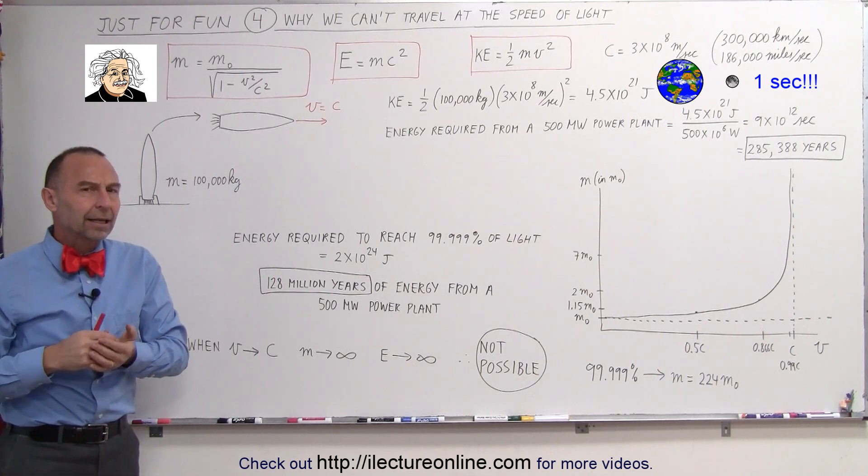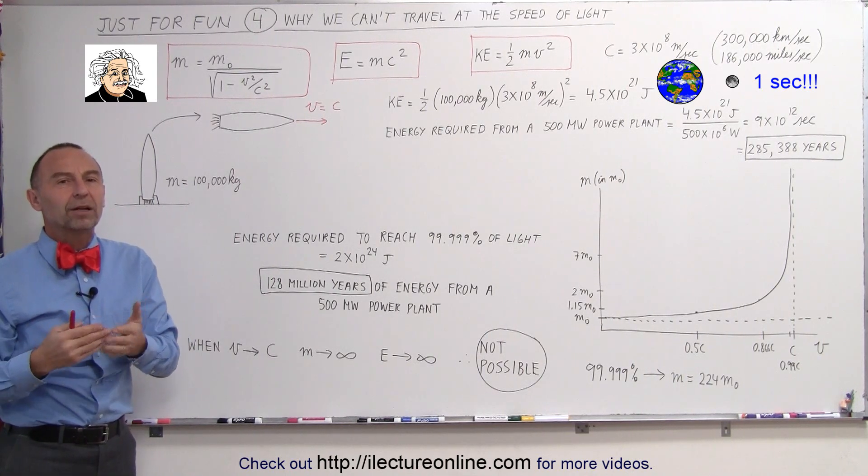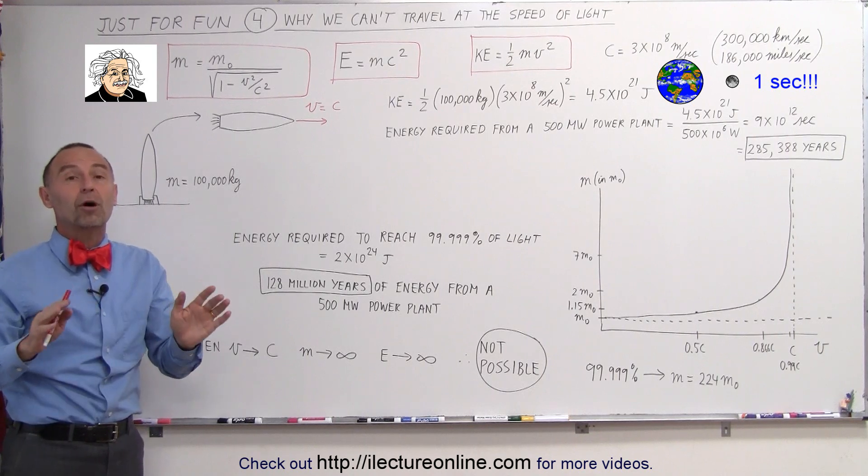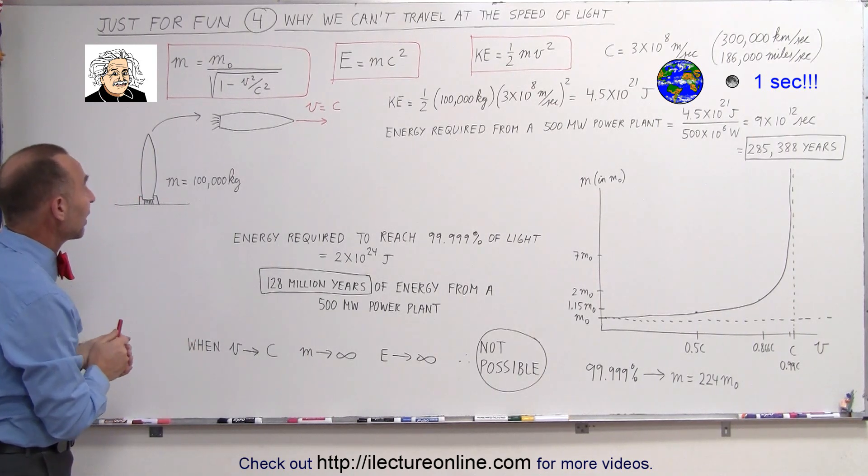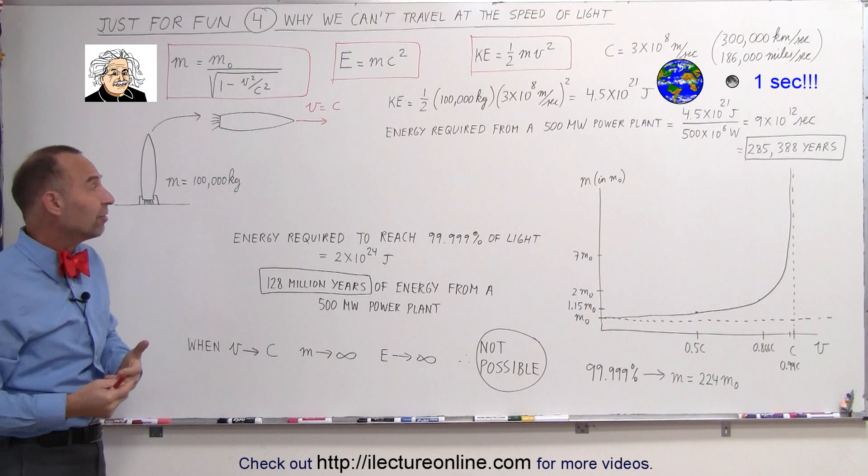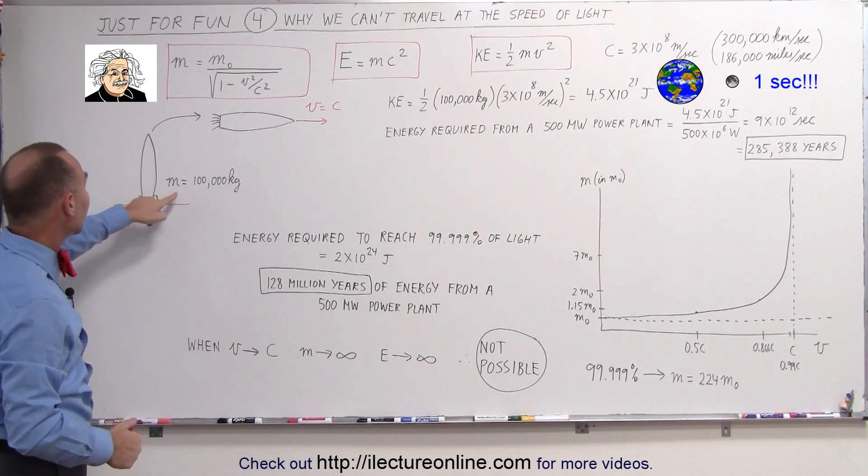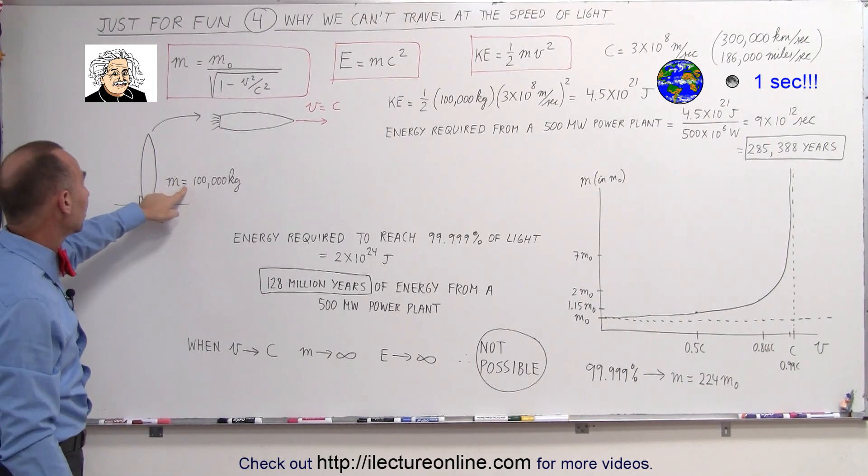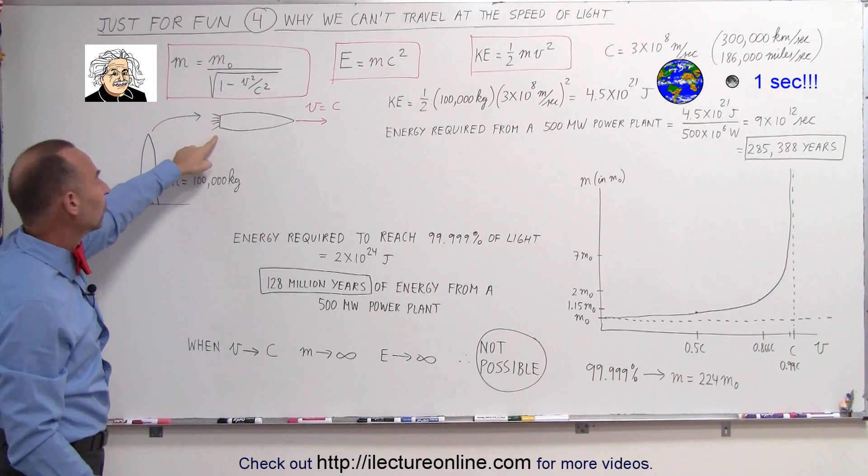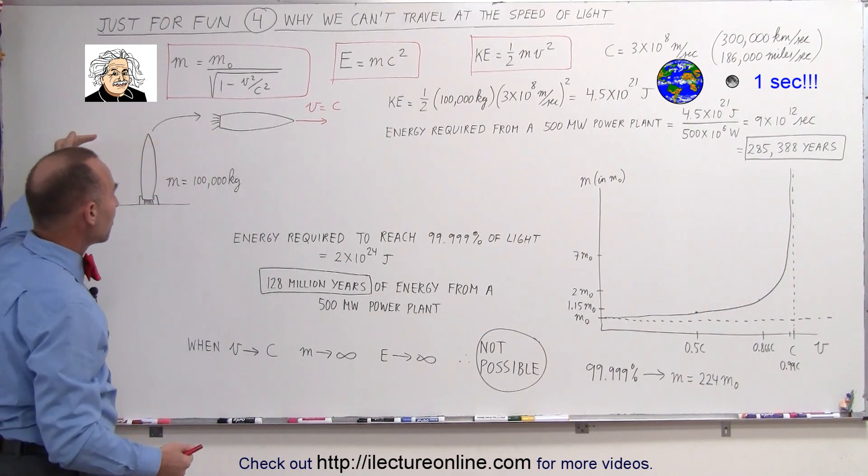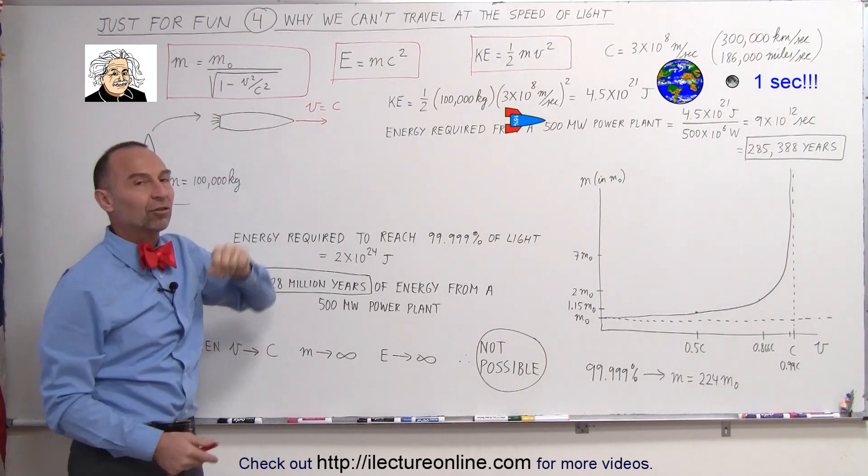Let's just say that it would be possible to travel at the speed of light. Let's get rid of all the special relativity effects that matter has when it travels fast. So you jump in a spaceship. Let's say the spaceship has a mass of 100,000 kilograms. You take off into space, you turn off the afterburners, you pick up speed until you travel at the speed of light.